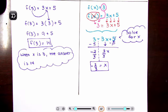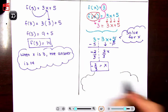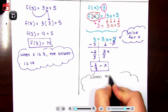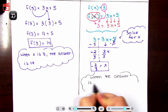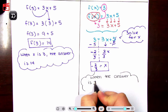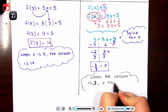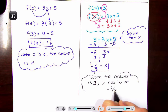So this means when the answer is 3, x has to be negative 2 thirds.